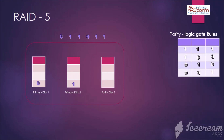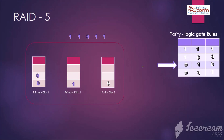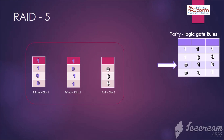Parity Logic Gate Rules: as we all remembered from school, we studied basic logic rules. We are now applying the same algorithm to set up the parity disk drive. For example, 0 AND 1 is equal to 0. The correct match for this set is 0 as per the logic rules. Apply the same rules to all sets to get the parity values, as you can see the data stored in disk 3. This is a disk configuration that uses disk striping with parity. Because data and parity are striped evenly across all disks, no single disk is a bottleneck. Striping also allows users to reconstruct data in case of a disk failure.